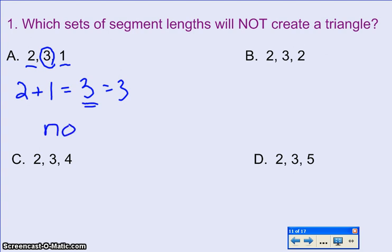Let's look at B. We have side lengths of 2, 3, and 2. Can these create a triangle? Pick the smallest two and add them up. 2 plus 2 equals 4, and now we're going to compare it with the biggest side of my triangle, which is 3. Well, 4 is bigger than 3, so the sum of my two smaller sides is bigger than my largest side, so I can say yes, I have a triangle.